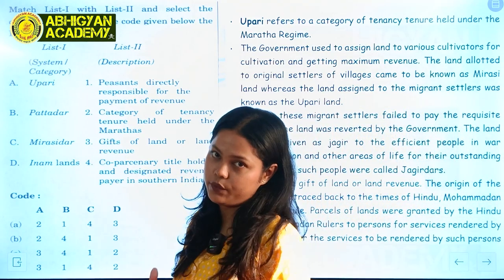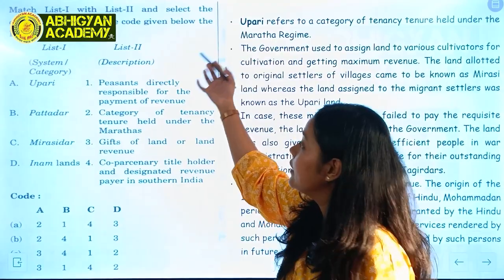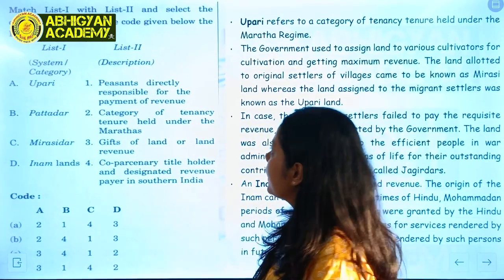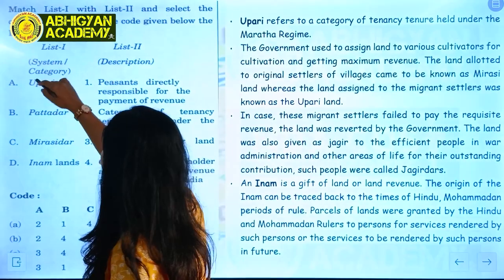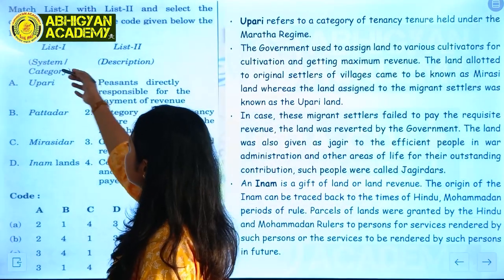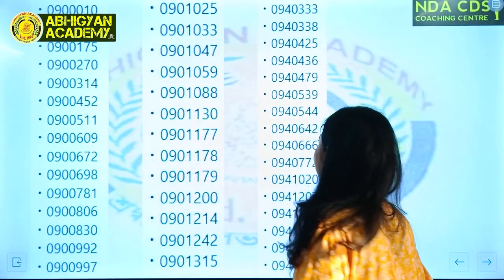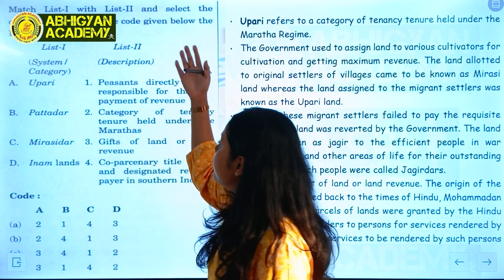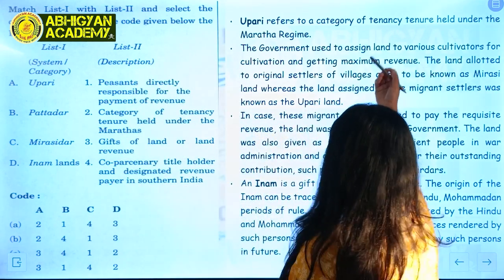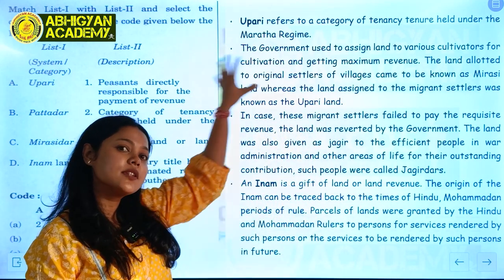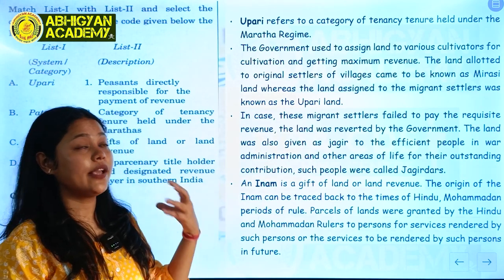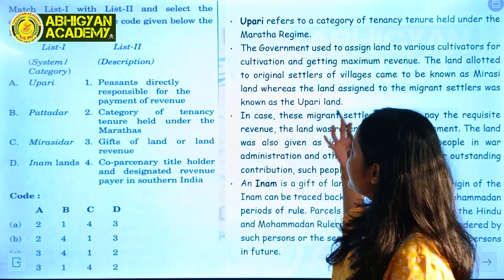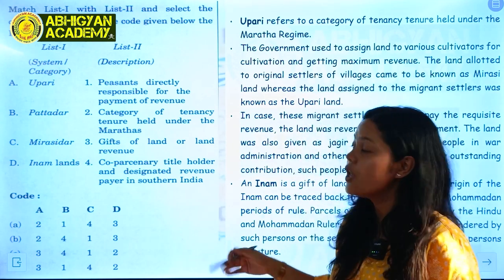The first question is a match-the-following question. List one gives system categories — Upari, Patadar, Mirasdar, and Inam Land — and list two gives descriptions of these categories. We have discussed this topic in class and provided notes on it, and we are happy to confirm that this kind of question, which we covered in class, actually came in the exam.